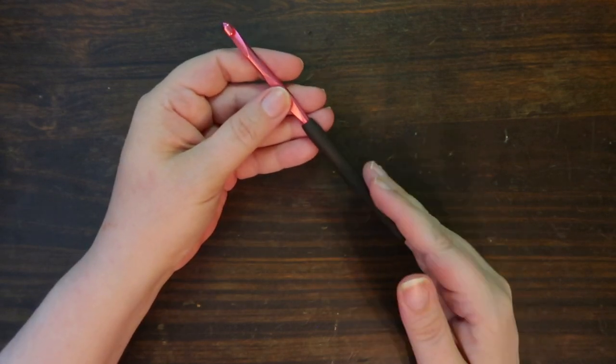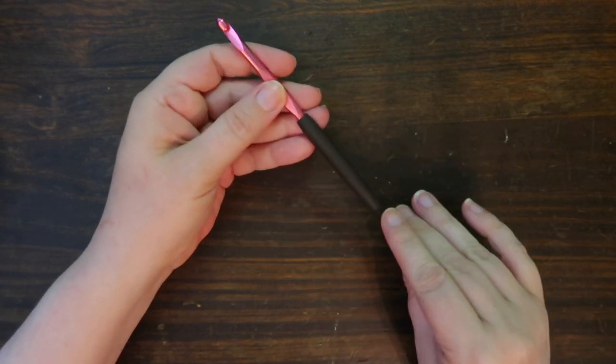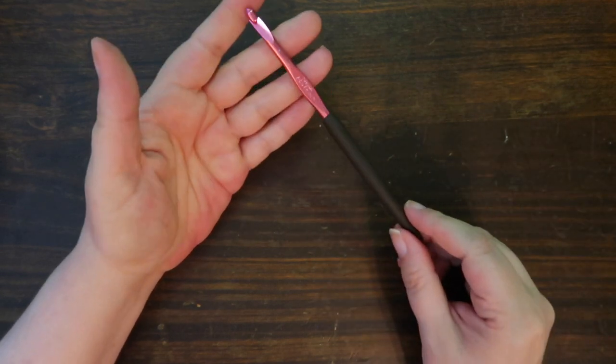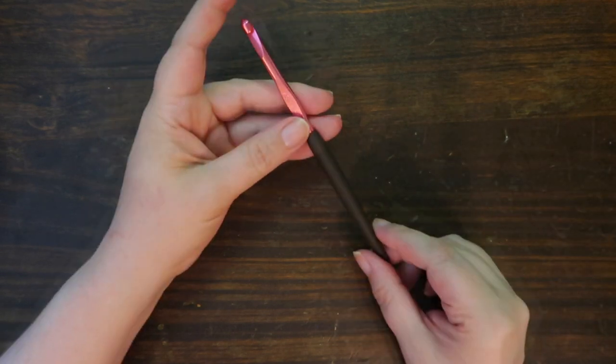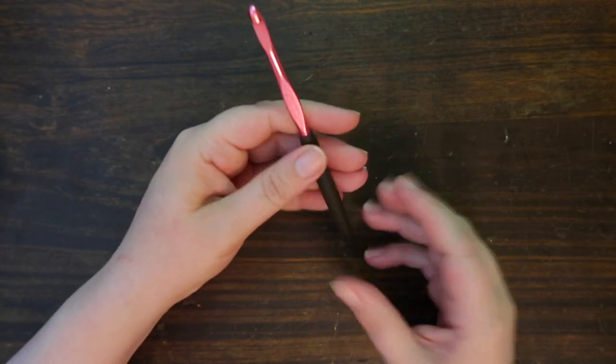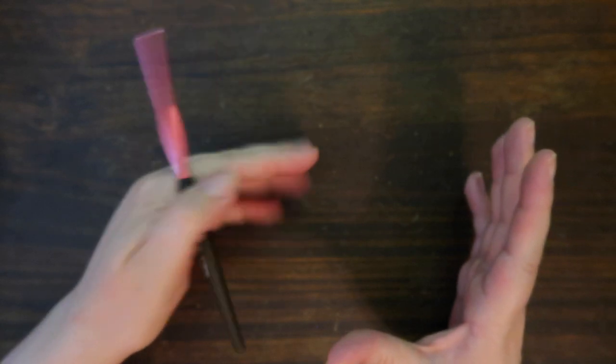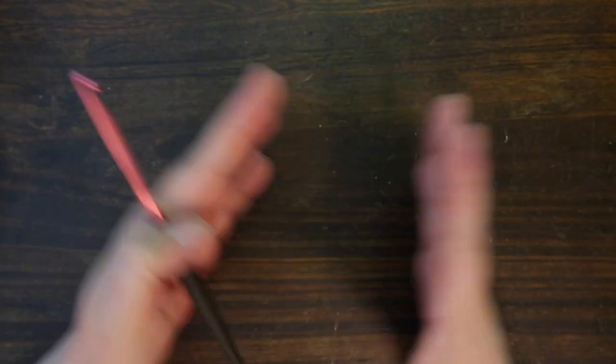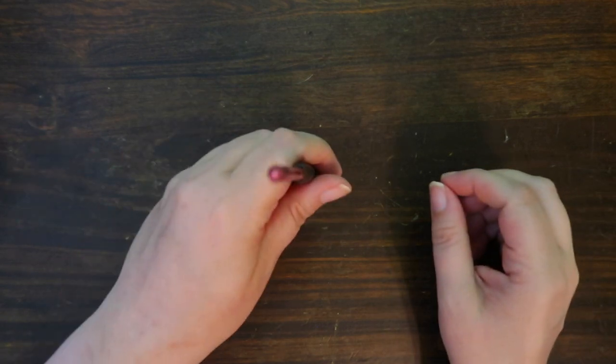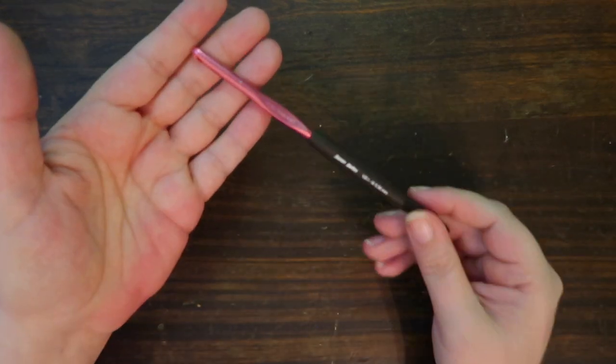As far as purchasing, if you do want to get the ergonomic hooks and you don't want to get a set or just a single hook, I found this at, I believe it was Michael's. I found this. They also sell them at Joann's, but they had, you know, when you go to an office store and you see a bunch of pens and they're in these individual sections kind of standing up like this, they had something like that with the Susan Bates hooks. And that's where I found this hook.